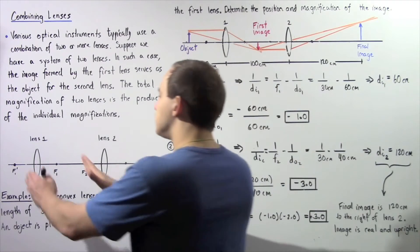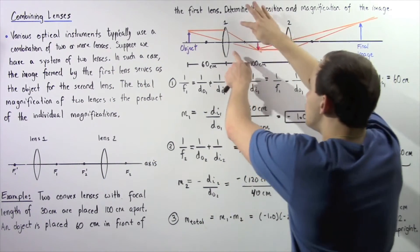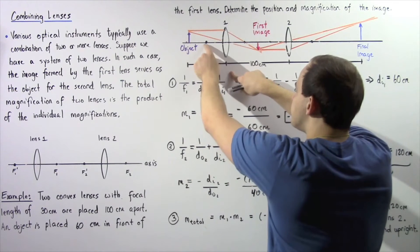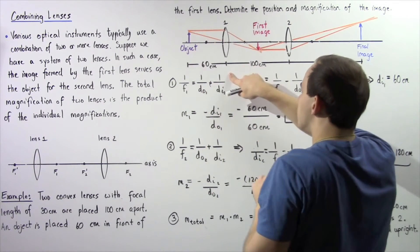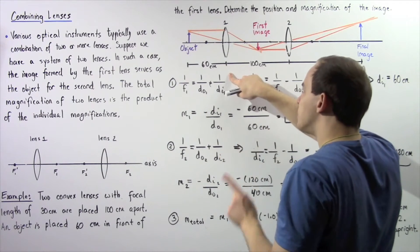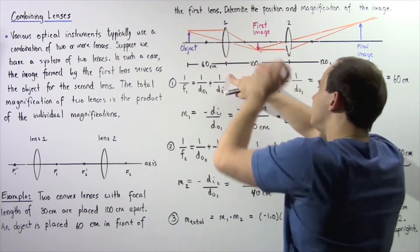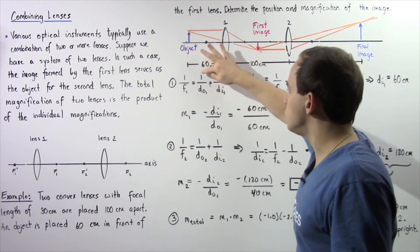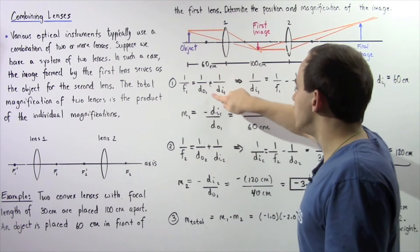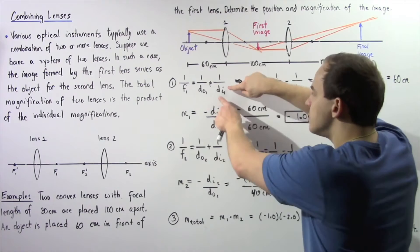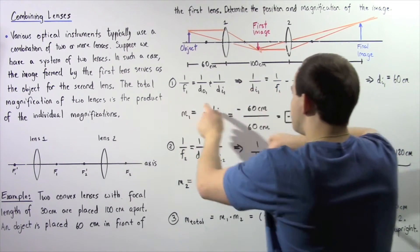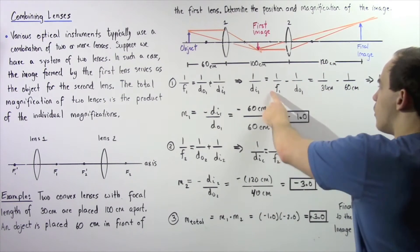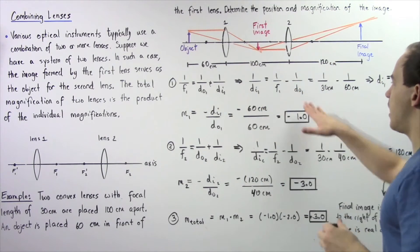Let's begin by first looking at lens number one. Our object is placed 60 centimeters to the left of lens number one. This is the focal point of lens number one. We want to determine the image distance for the image produced by lens number one, so let's apply the thin lens equation: one divided by the focal length of lens one equals one divided by the object distance plus one divided by the image distance for lens one.